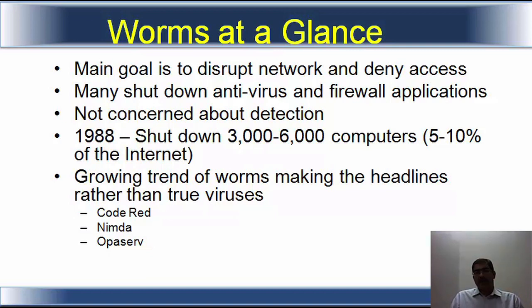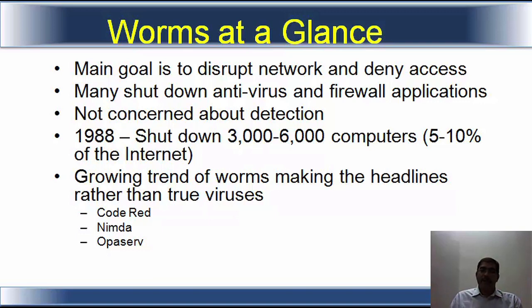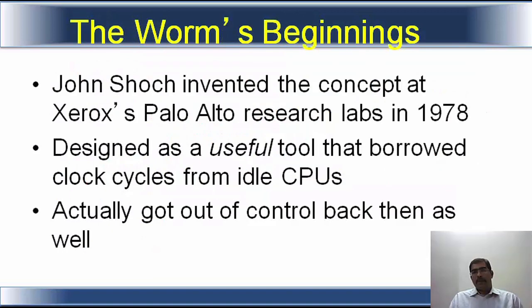The main goal of the worm is to disrupt the network and deny access. Many worms shut down antivirus and firewall applications — the worm has the capability to shut down your antivirus program or firewall. It is not concerned about detection. In 1988, the Morris worm shut down 3,000 to 6,000 computers — at that time, that was 5 to 10 percent of the internet. Growing trends show worms making the headlines rather than true viruses — Code Red, Nimda, and Opaserv were famous. Worms achieve widespread geographic infection rather than just system infection. They find potential targets, replicate, transfer, and execute. Worms are much more dangerous than viruses.